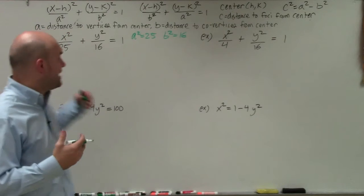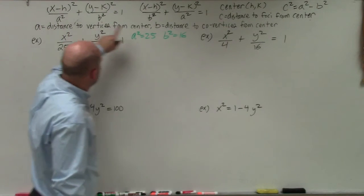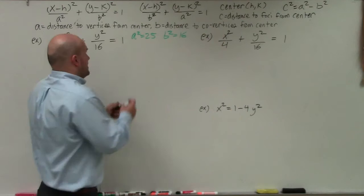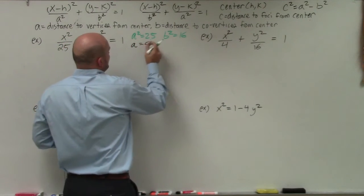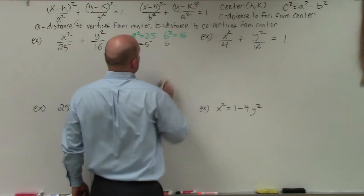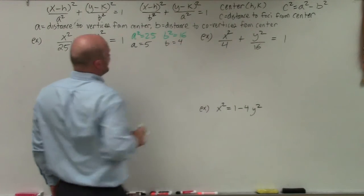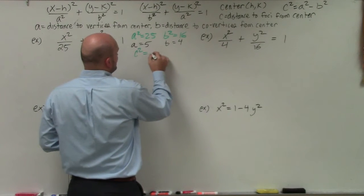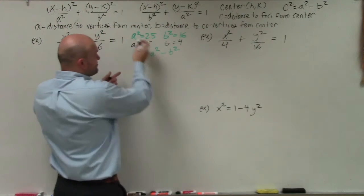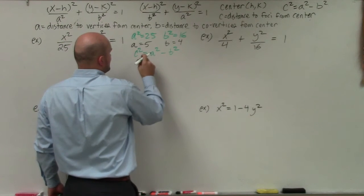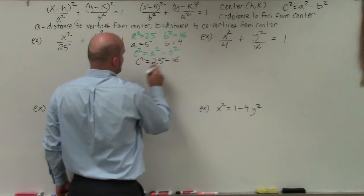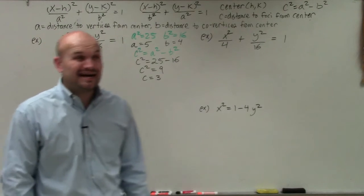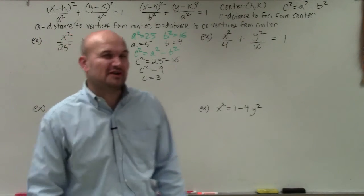To find the vertices, co-vertices, and center, I need to find A, B, and C. If A² is 25, then A is 5. If B² is 16, then B is 4. Now let's figure out C. Using the relationship C² = A² − B², I plug in: C² = 25 − 16 = 9, so C = 3. A, B, and C were all easy to identify here — that doesn't happen very often.